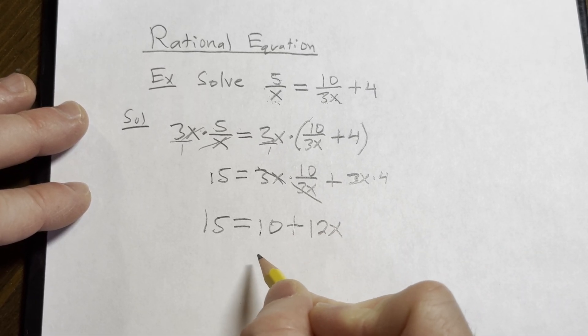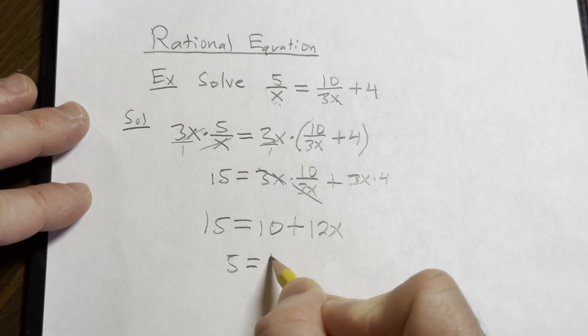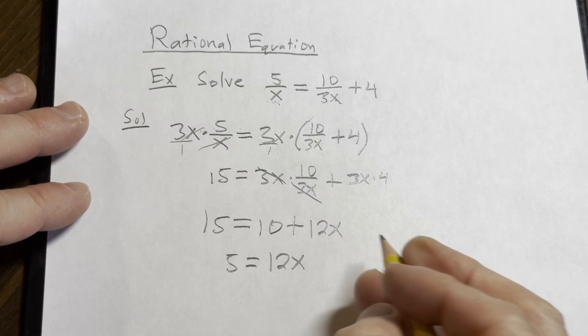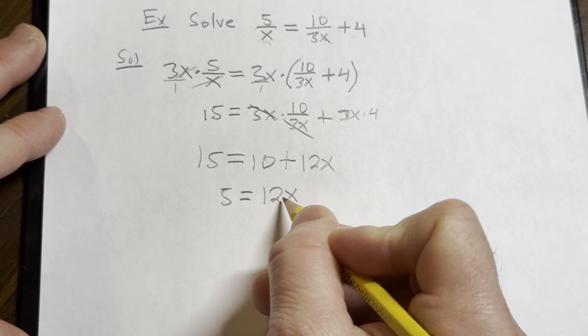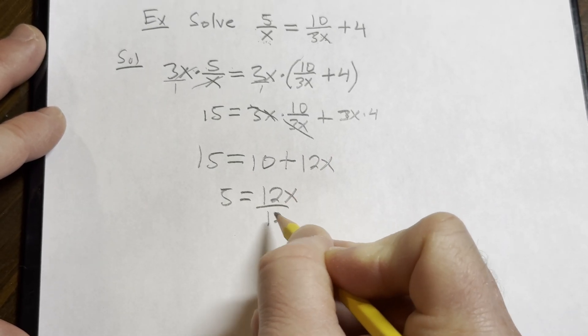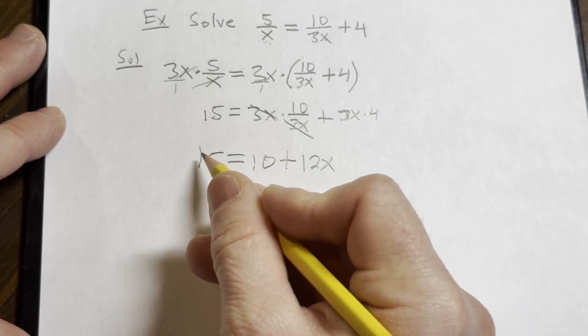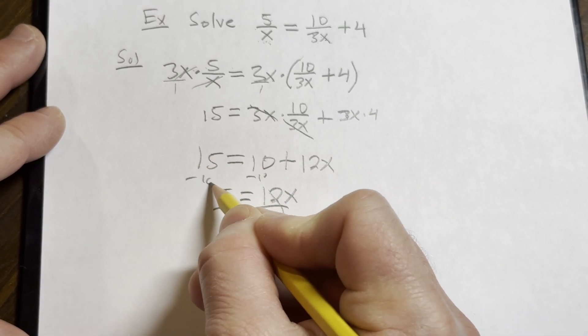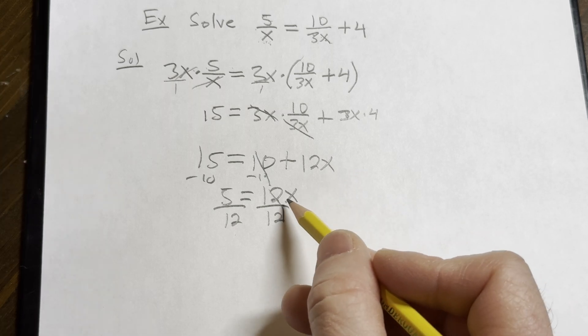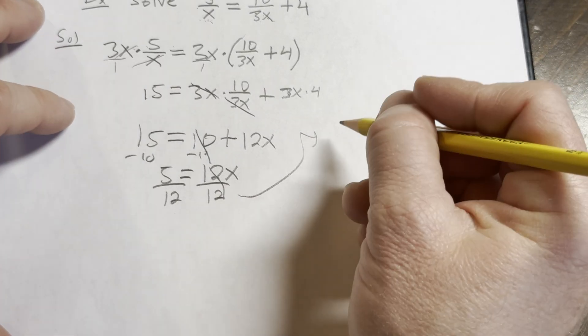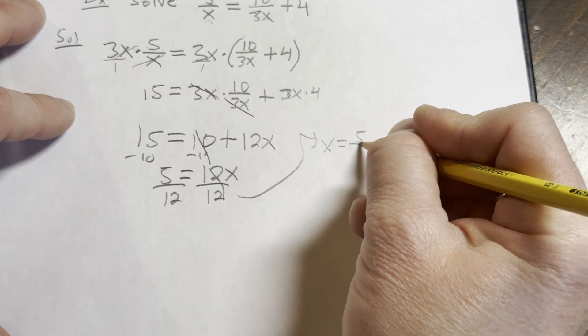So we're left with 15 equals 10 plus 12x. So subtracting 10 from both sides gives us 5 equals 12x. And then we could divide now by 12. And the reason we divide is because it's being multiplied. I did skip a step here. So I subtracted 10. Going a little fast.